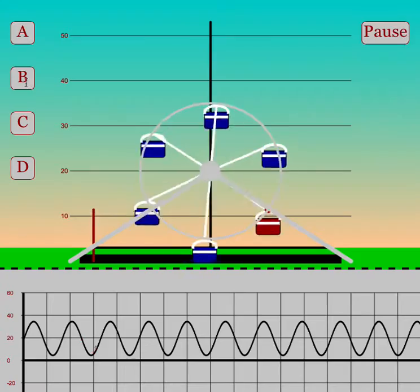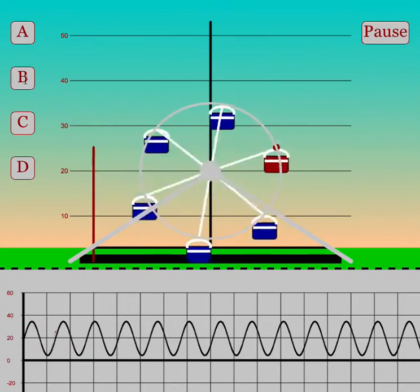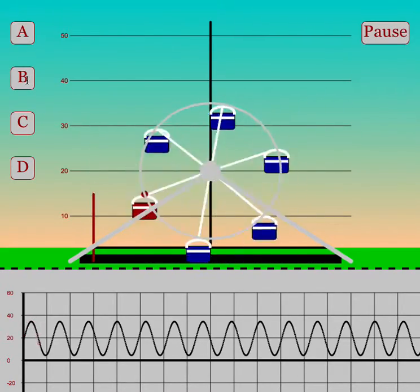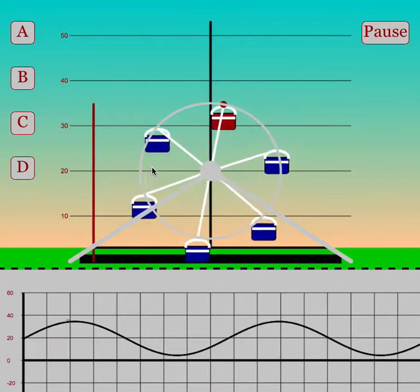Students can then also click on the B value, and they will notice the B value changes the speed of the Ferris wheel.